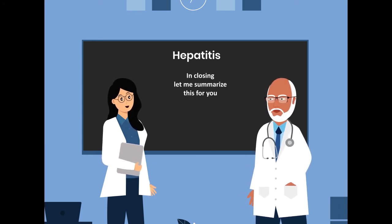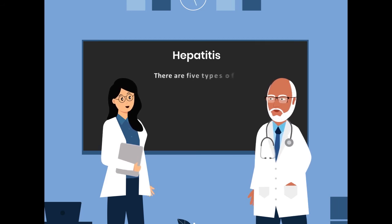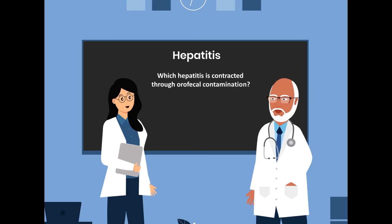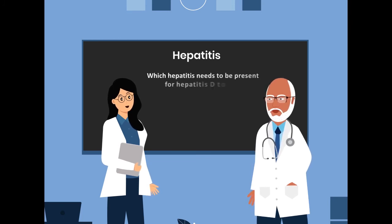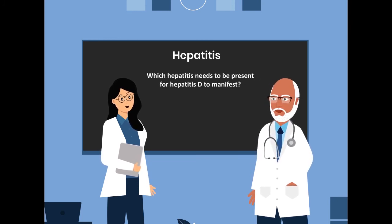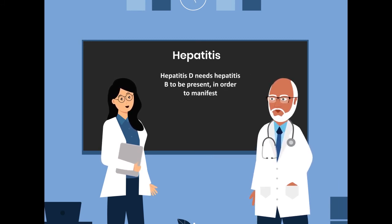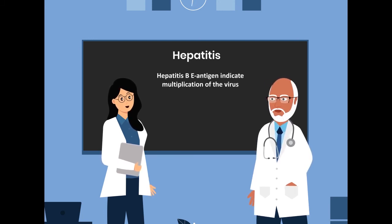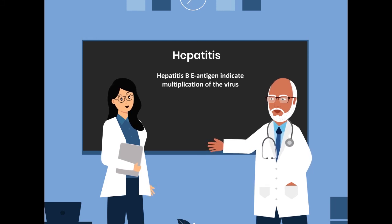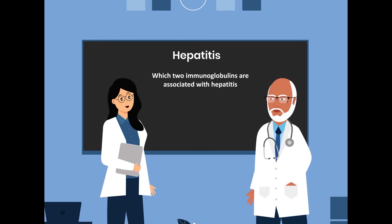In closing, let me summarize this for you. How many types of hepatitis are there? There are five types. Which hepatitis is contracted through oral fecal contamination? Hepatitis A and E are contracted through oral fecal contamination. Which hepatitis needs to be present for Hepatitis D to manifest? Hepatitis D needs Hepatitis B to be present in order to manifest. Which hepatitis marker represents viral multiplication? Hepatitis B E antigen indicates multiplication of the virus.